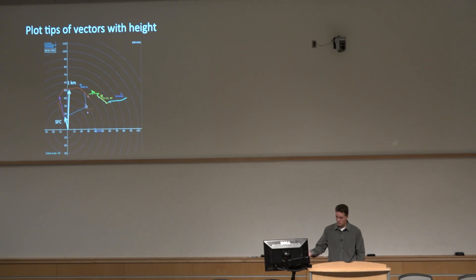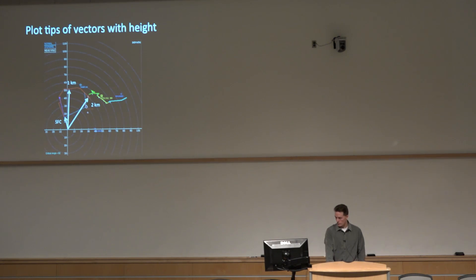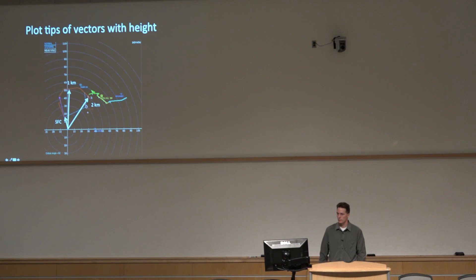The wind at one kilometer is out of the south at roughly 50 knots, so there's a big change in the wind just in that lowest couple hundred meters. At two kilometers it goes to southwest and stays around 50. So you just take all the winds and plot them — the hodograph is the resulting trace of the end of all those wind vectors.